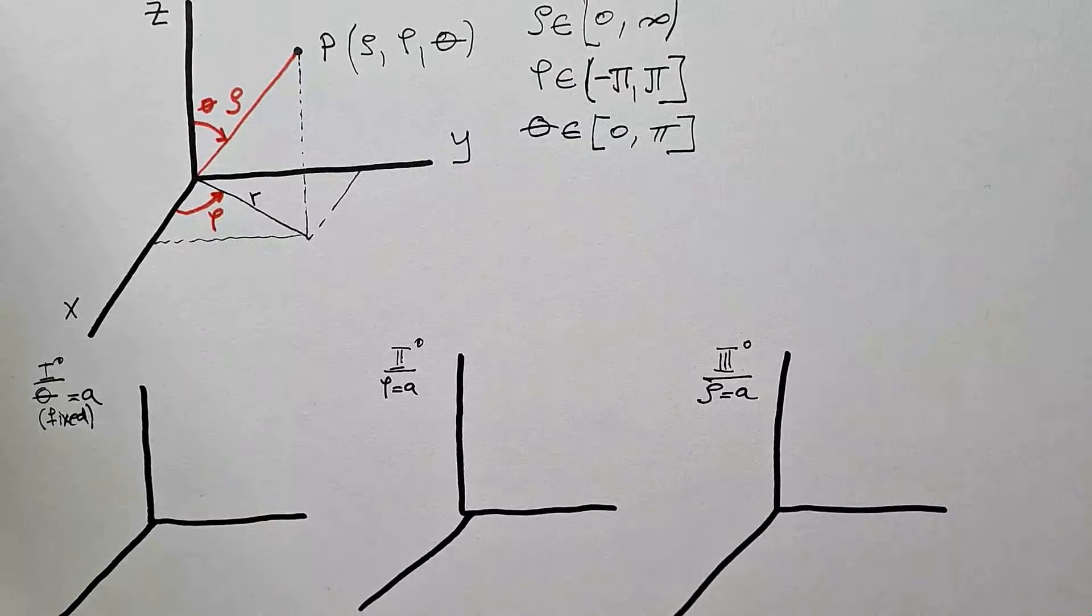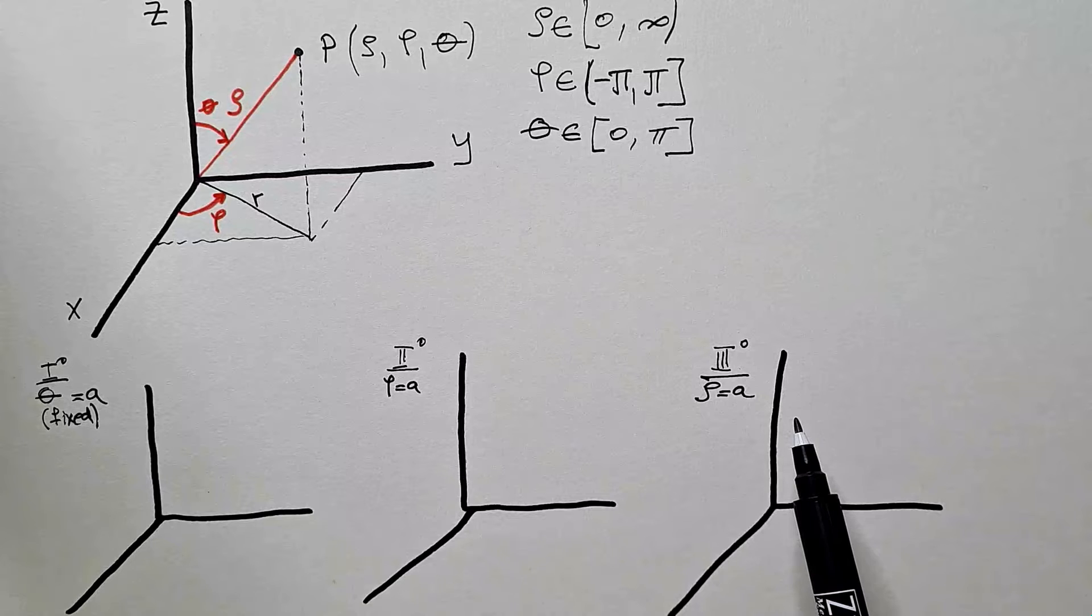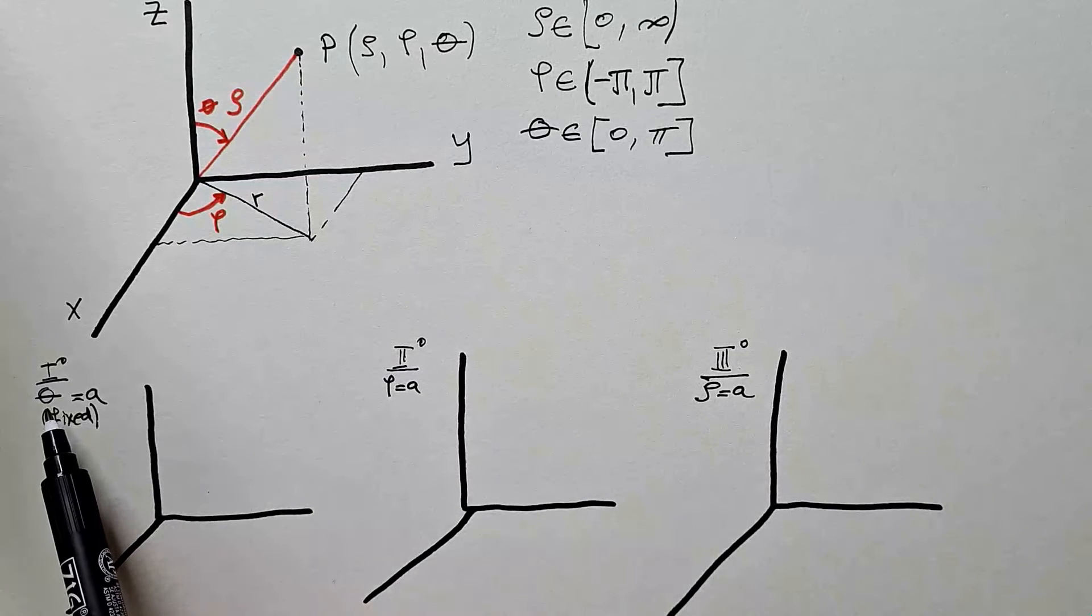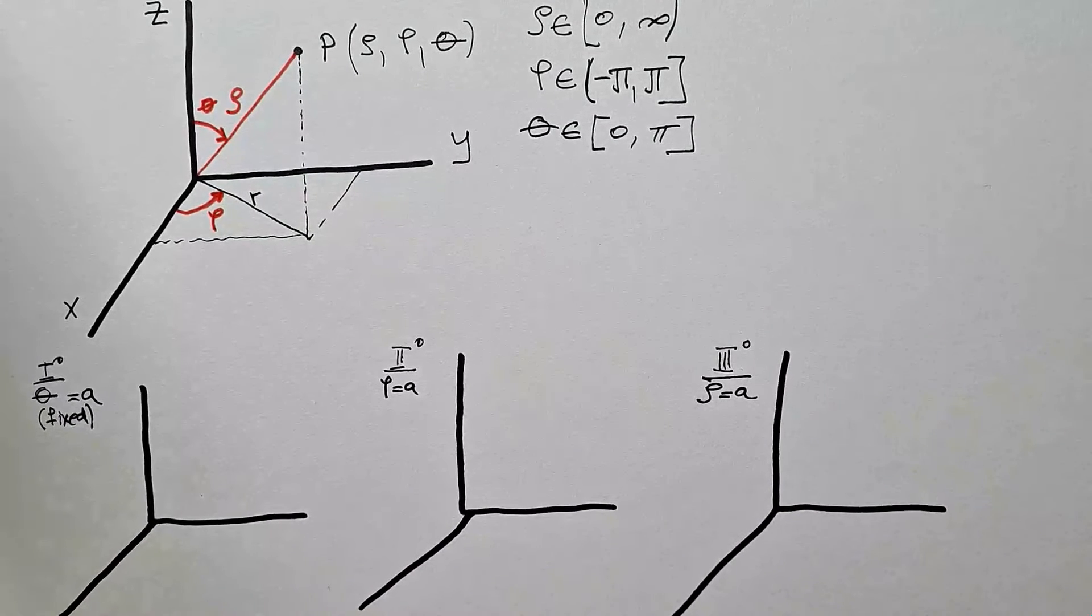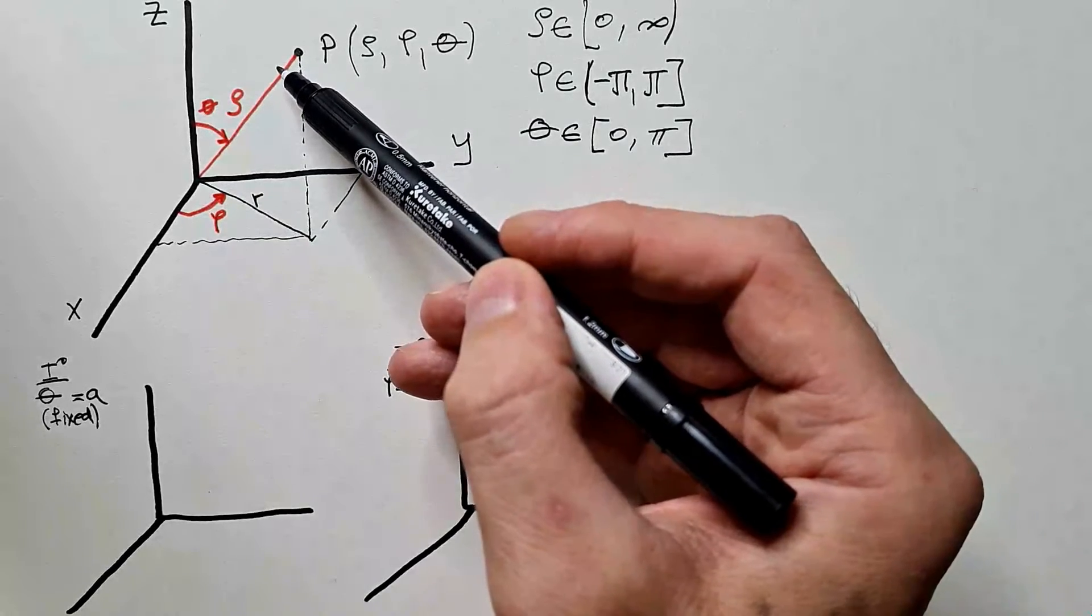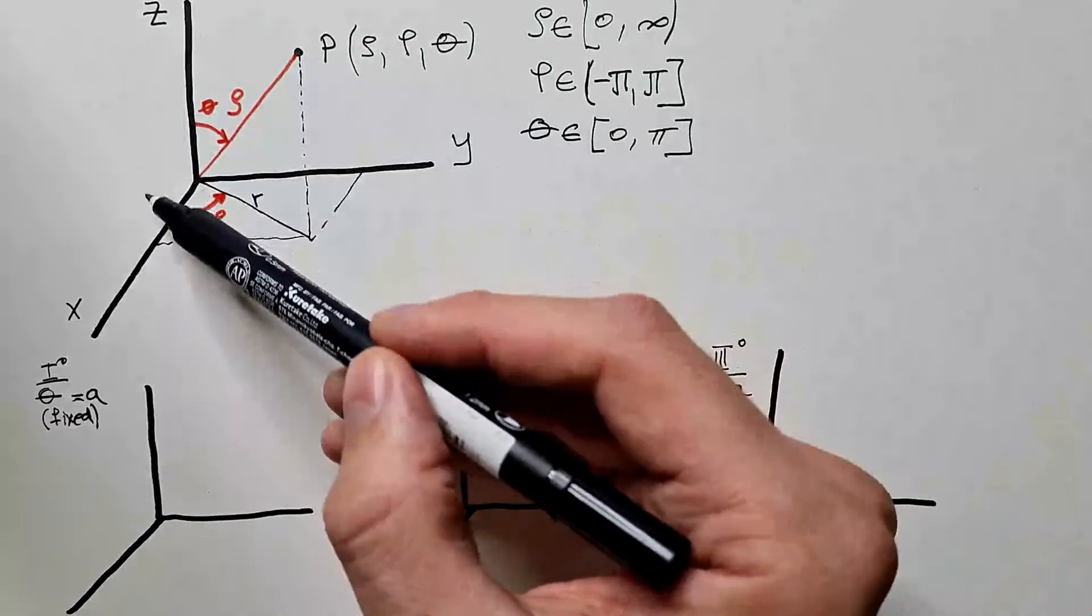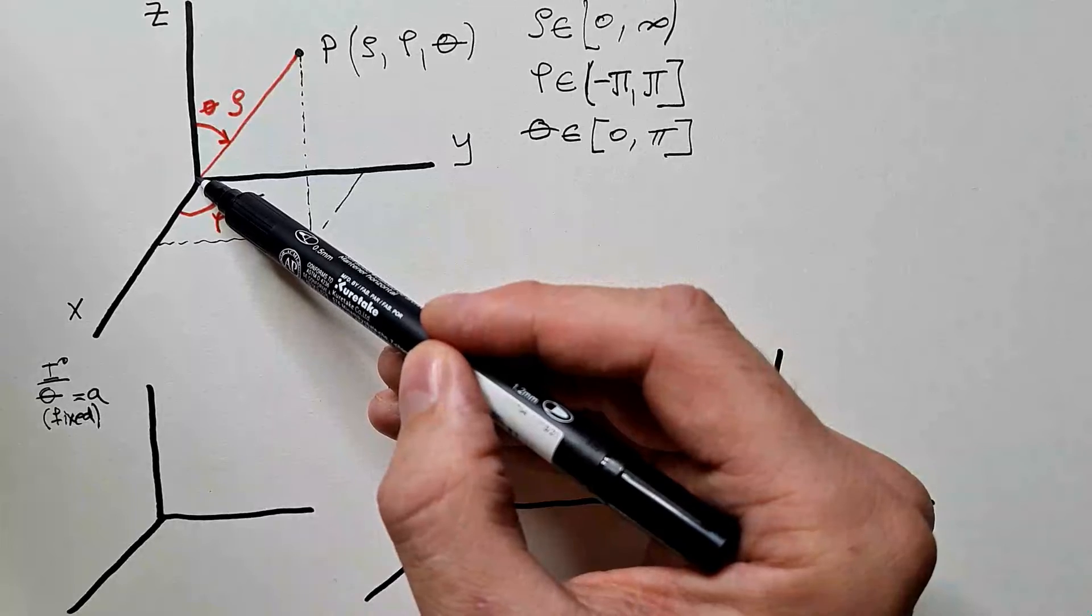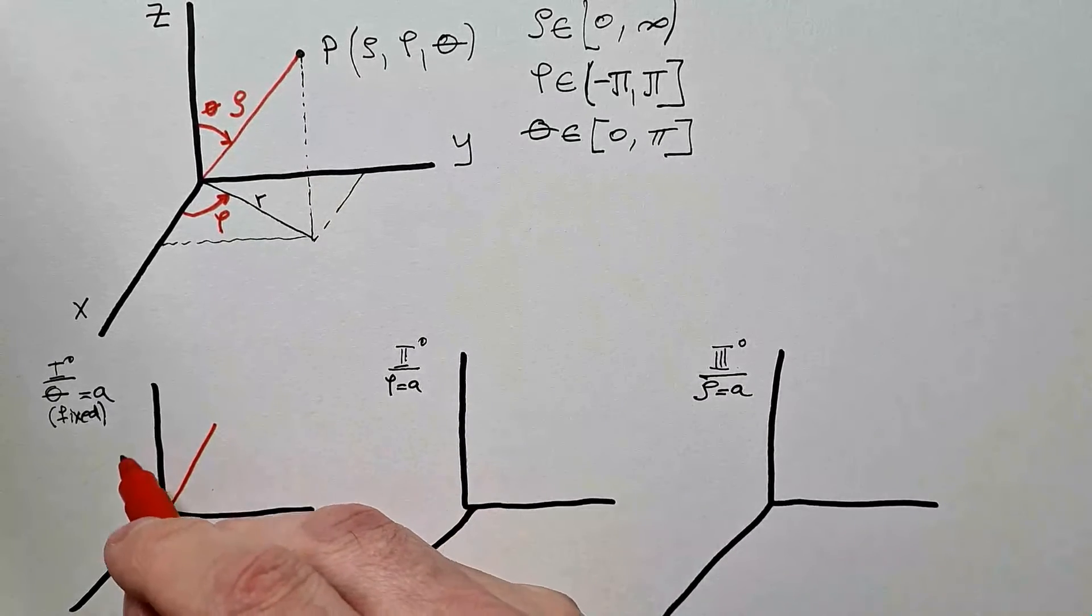Similar to my previous video on cylindrical coordinates, I would like to examine different surfaces that we get if we fix one of the coordinates and vary other two. In the first case, I will fix angle theta to some value A. You can conclude from this figure, using a little bit of imagination, if this angle is fixed, and I can go around between minus pi and pi, and I can also go from 0 to infinity, then the surface that I will get is a cone.